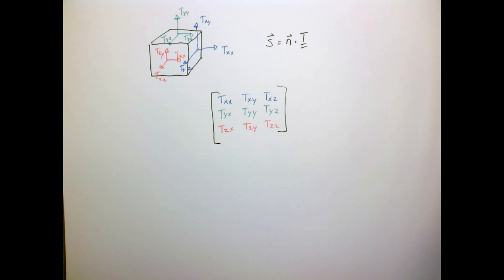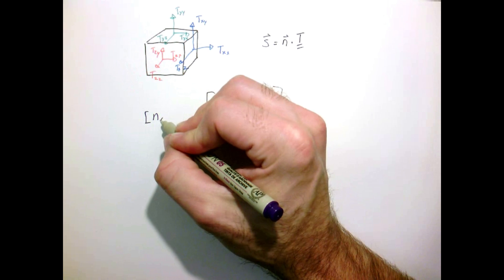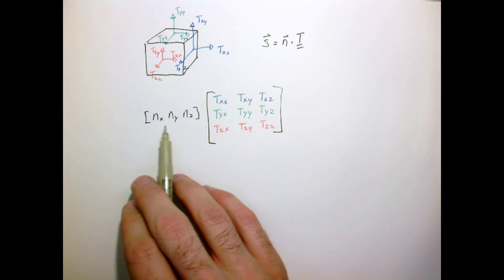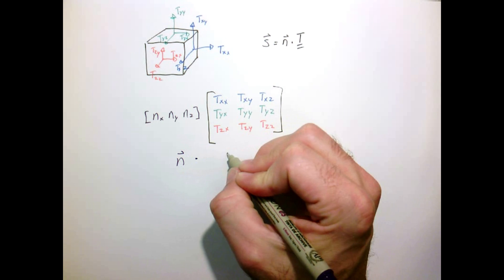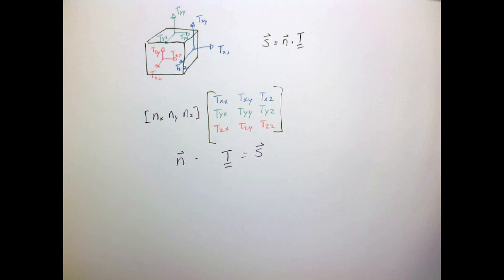Now the way I usually remember this is just write things out as sort of a vector matrix multiply. So if we write our normal vector as a column vector, and I take the vector matrix product of this vector n dotted with this matrix τ, then that gives me a vector which is the stress vector.